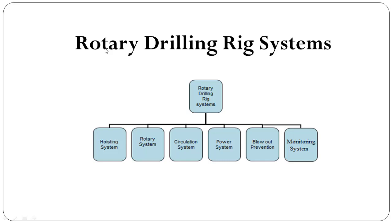The rotary drilling rig system can be classified into six systems: hoisting system, rotary system, circulation system, power system, blowout prevention system, and monitoring system.